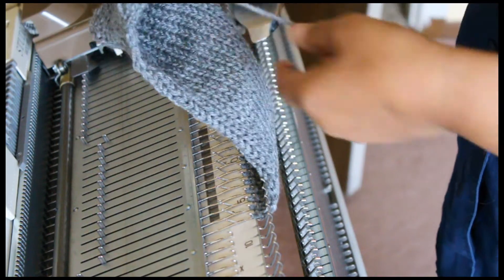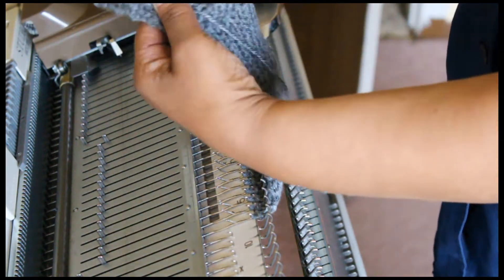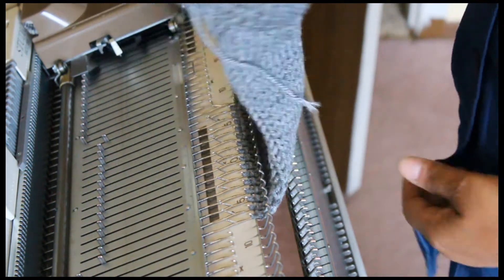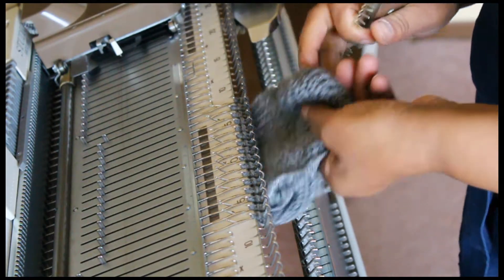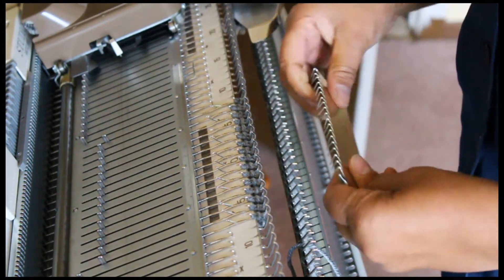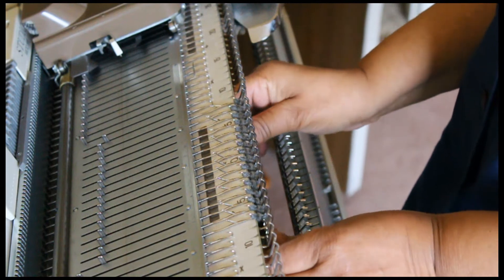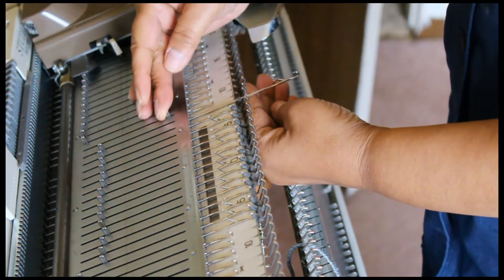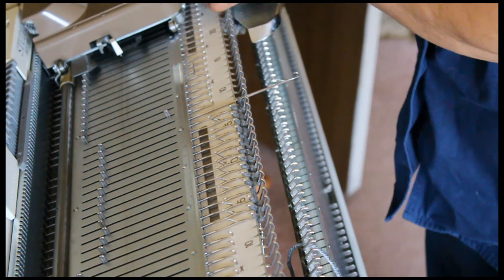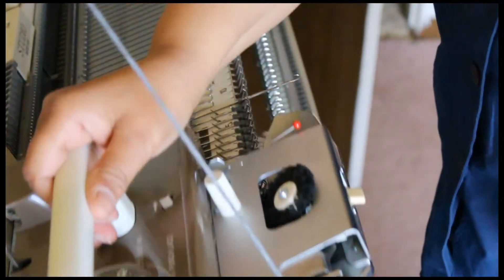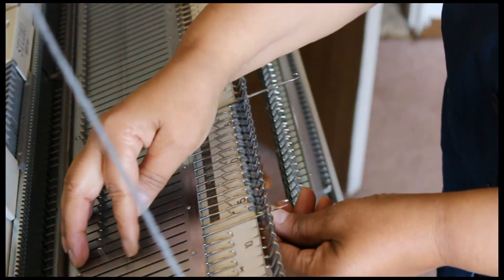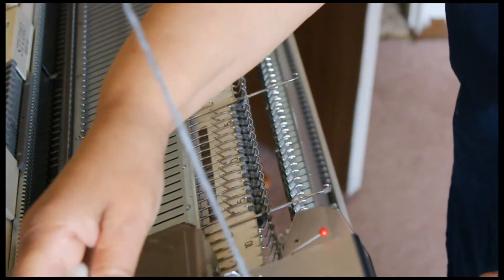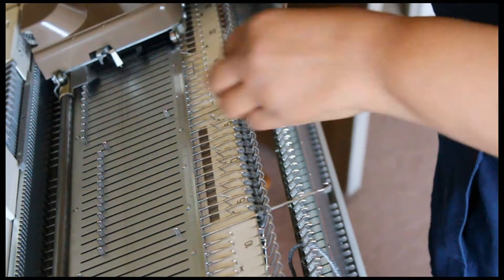There, we completed the 26 rows. The next step is to start working on the toe and this would be a repeat of the heel using the same method of short row. Set the machine carriage to hold, push out the needle nearest the carriage, knit one row and repeat the same on the other side.